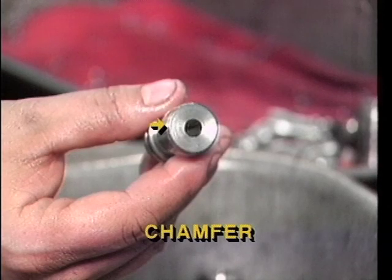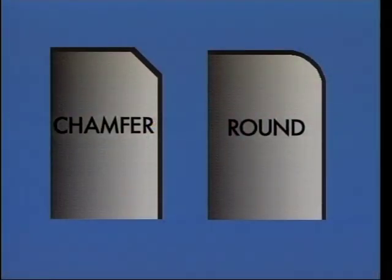Chamfers are another special part feature. Chamfering is the cutting away of the corner of an edge on a part. Edges are chamfered for the same reason they're rounded, to eliminate sharp corners. The difference between the two, however, is that the rounded edge is smoothly rounded, while the chamfered edge is flat.